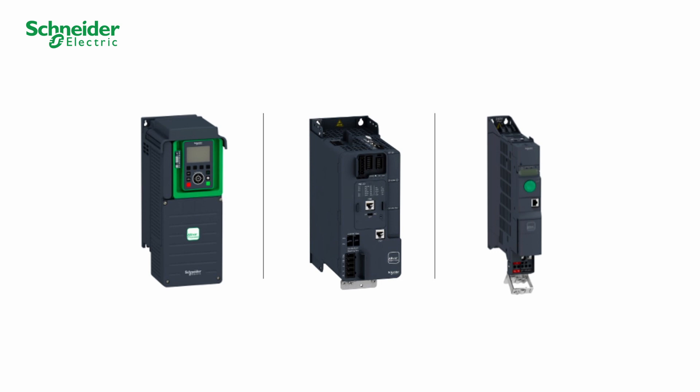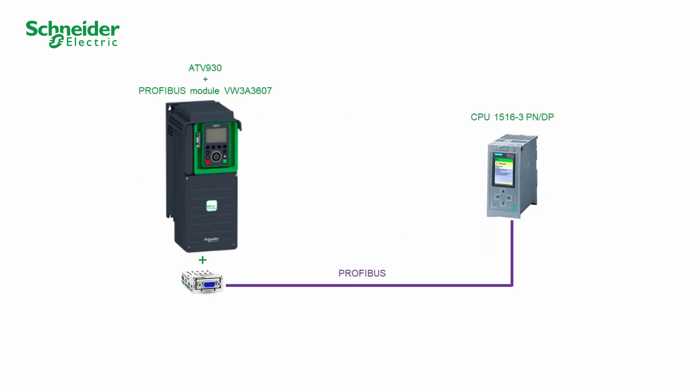The module used is VW3A3607. An ATV930 with VW3A3607 and CPU1516-3 PN/DP will be used in this video. Please refer to the ATV930 installation manual and the user manual of the PROFIBUS module VW3A3607 for the hardware setting and connection.